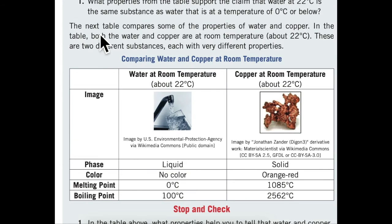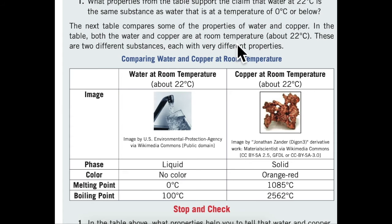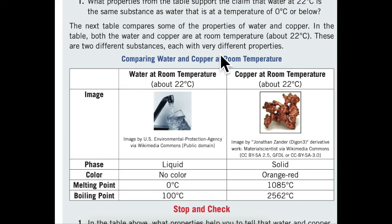The next table compares some of the properties of water and copper. In the table, both the water and copper are at room temperature, about 22 degrees Celsius. These are two different substances, each with very different properties.